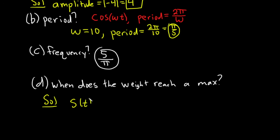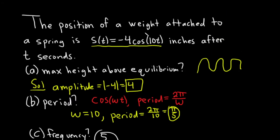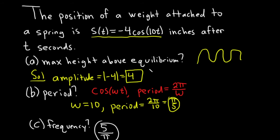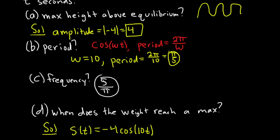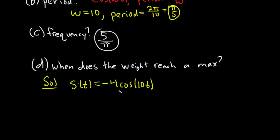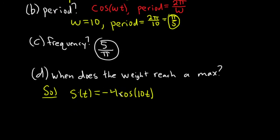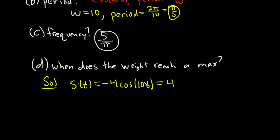This gives you the height of the weight after it's released. So now we want to know when it reaches the maximum height. Well, we know the maximum height is 4, and this function tells us the height. So basically, we set this equal to 4. And then we just solve this equation for t.